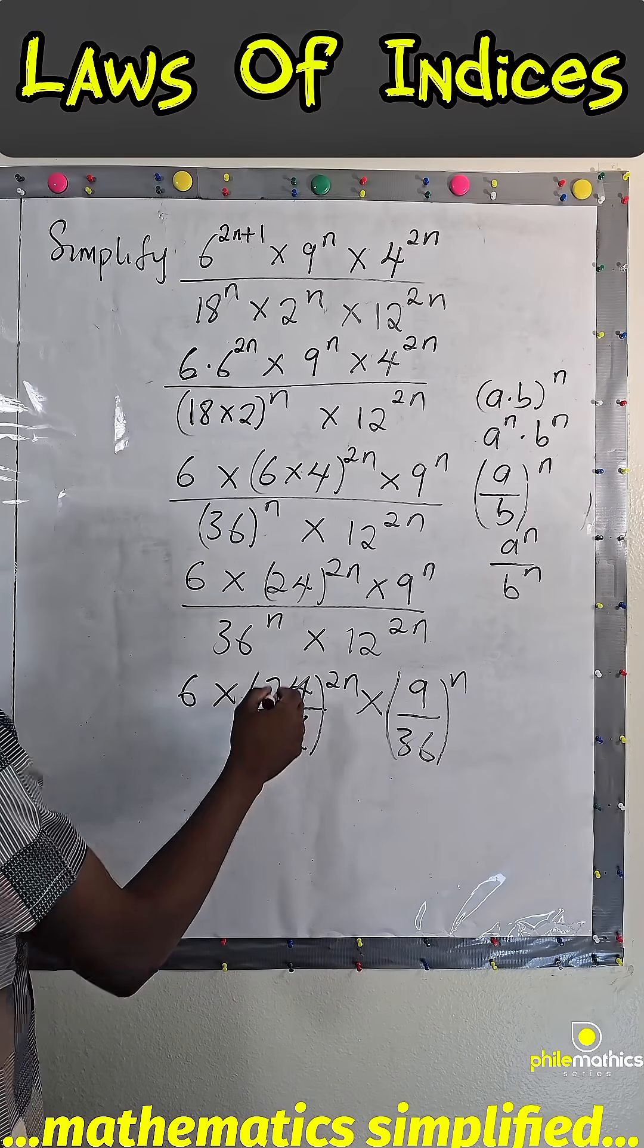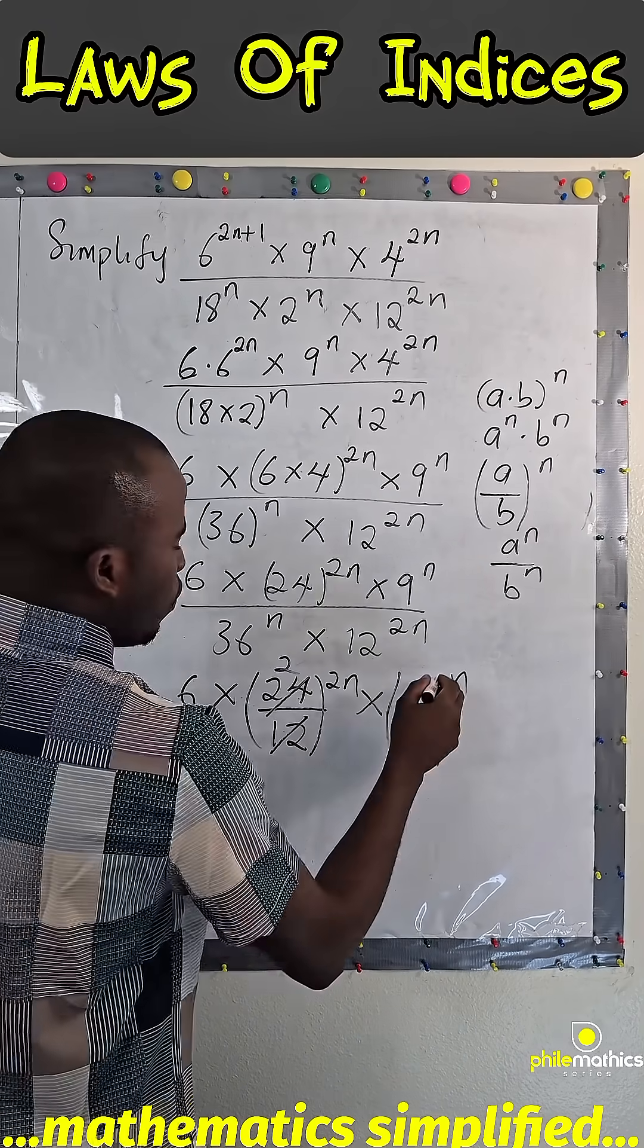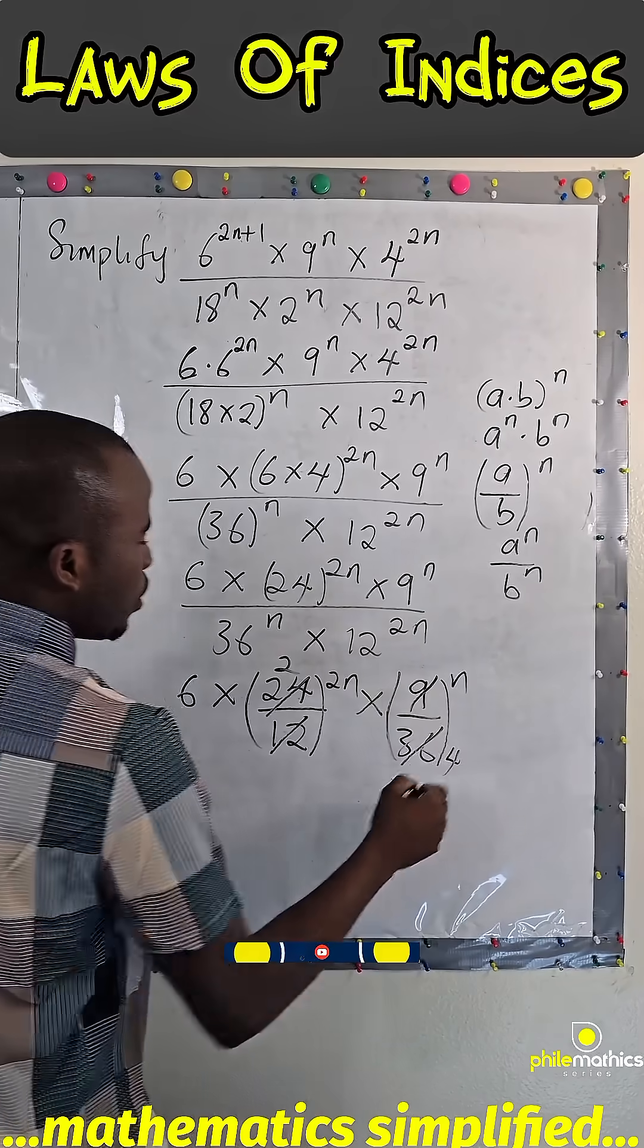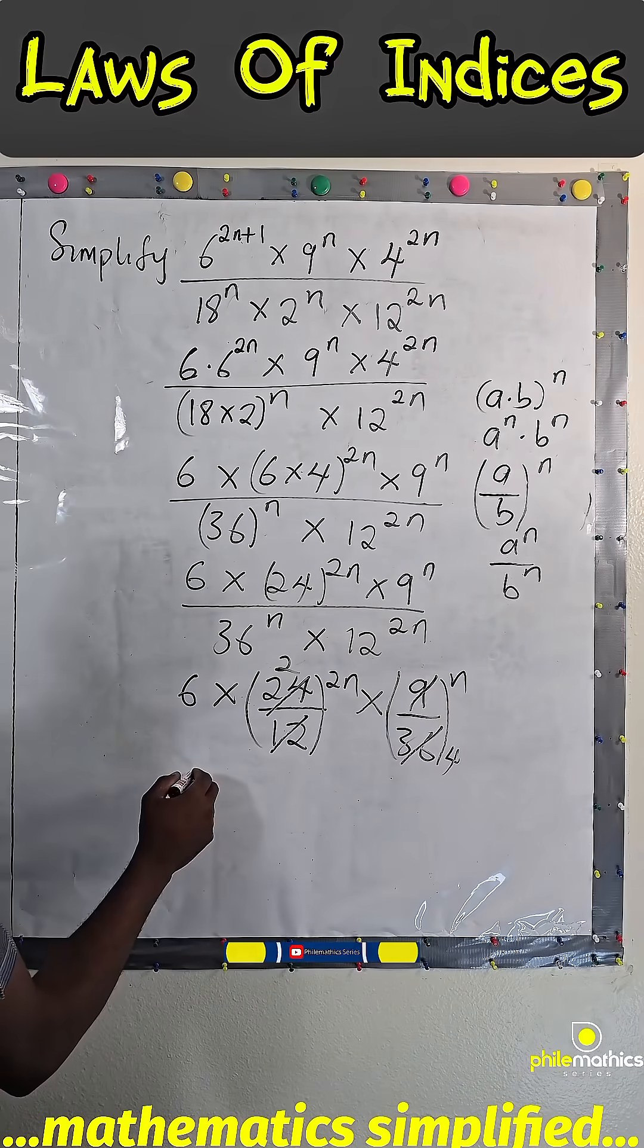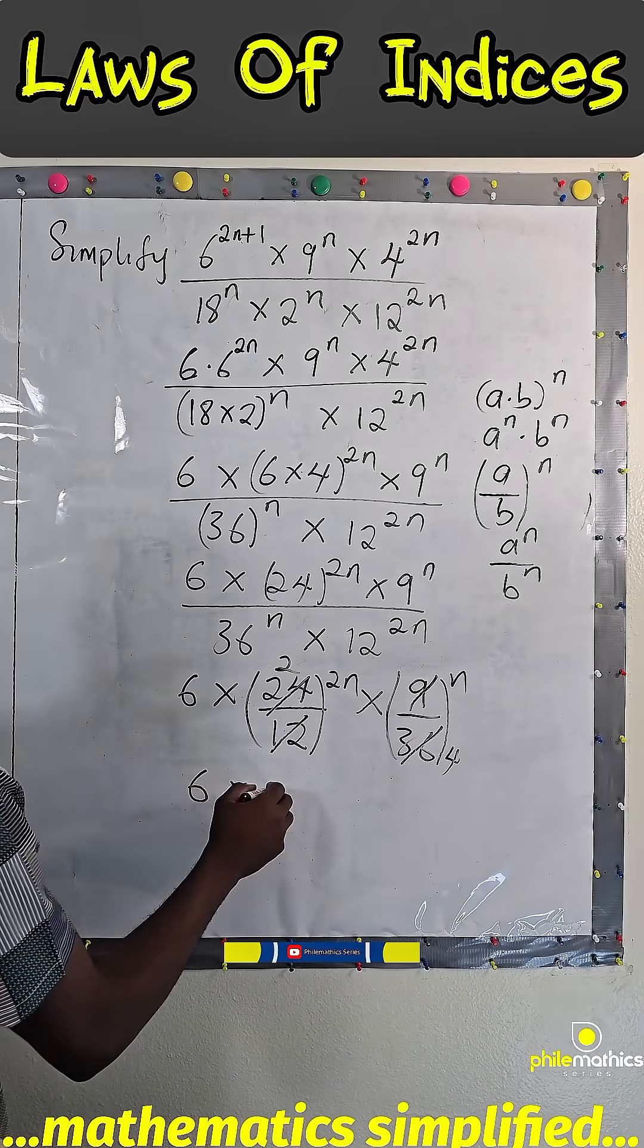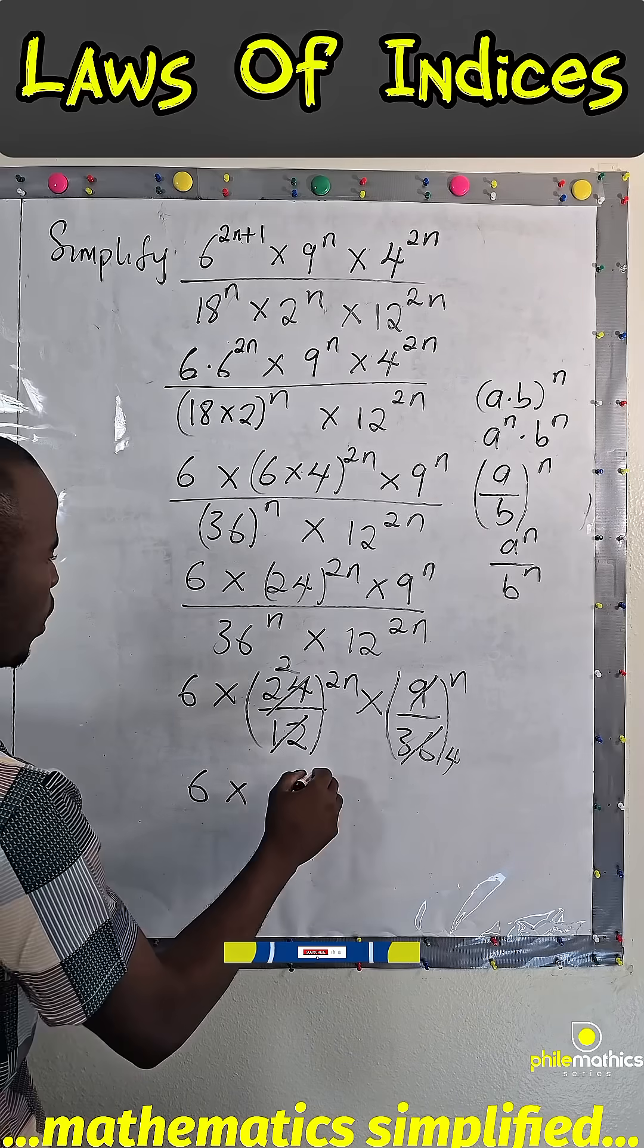to power n. 12 can go into 24 two times, and it can go into 36 four times. So I am left with 6 times 2 raised to power 2n